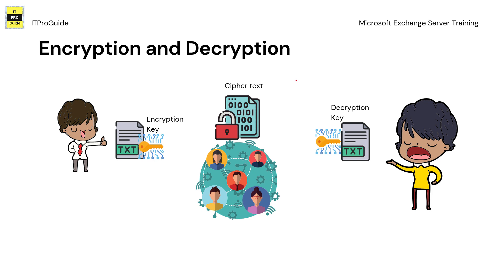Encryption is the process of converting a normal message — plain text — into a meaningless message — cipher text. Cipher text is not readable unless it is decrypted. Decryption is the process of converting that meaningless cipher text back into its original form. Encryption is done using a key and an algorithm. Once a message is encrypted using a key and algorithm, it becomes cipher text, and while decrypting you use the same algorithm and the same key to get back the plain text.